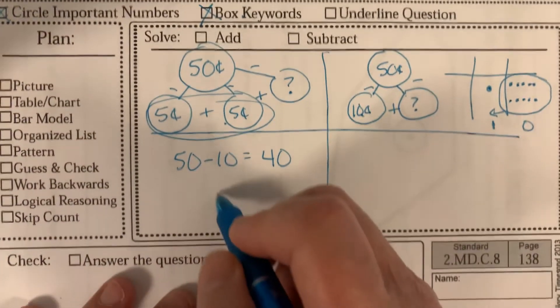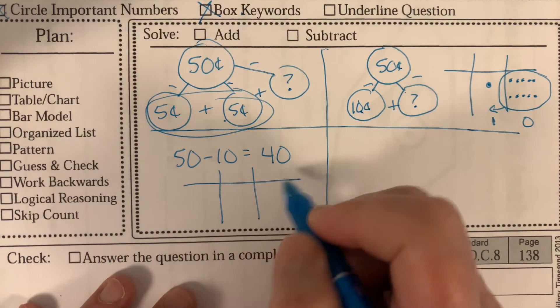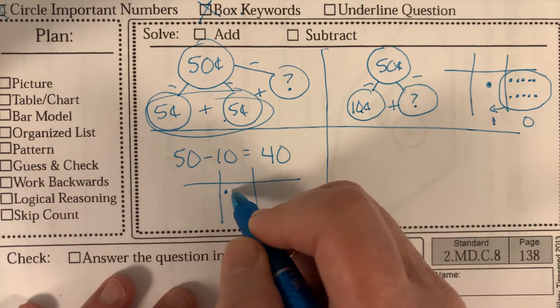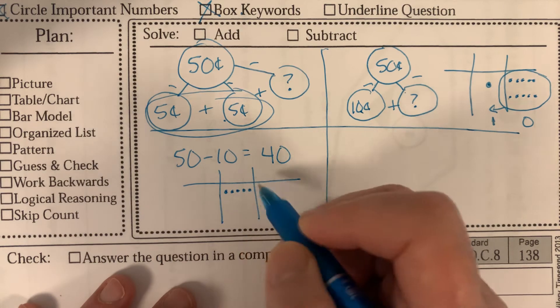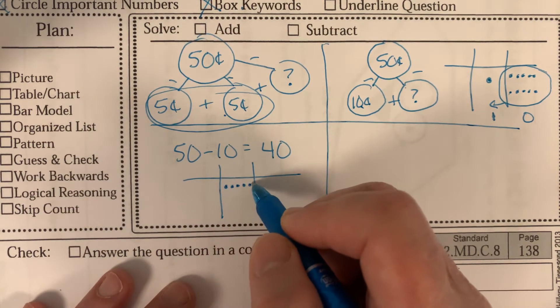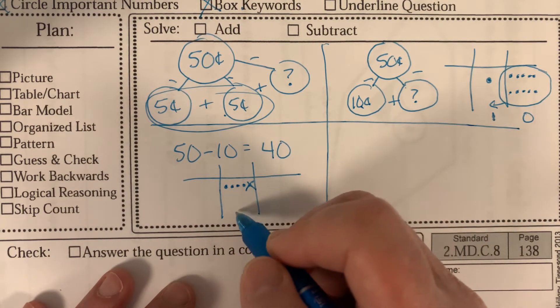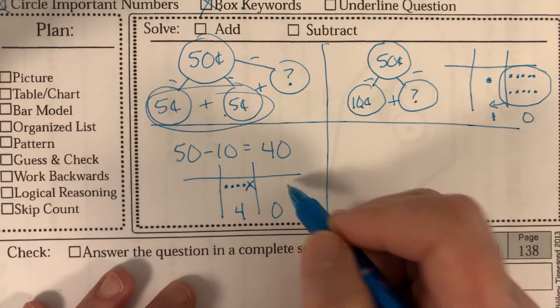And if we needed to prove that to ourselves, we could do it like this. 50 would be five tens, minus 10, minus just one 10. And then we have four 10s and no ones left over.